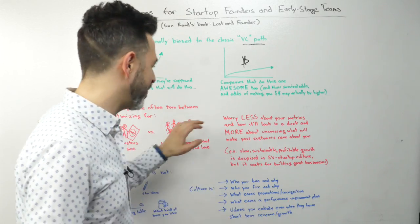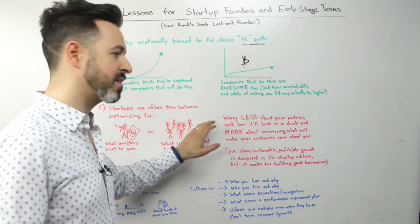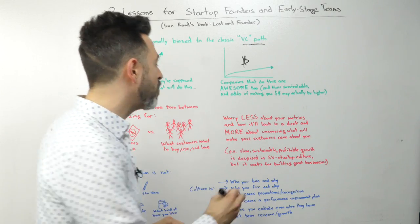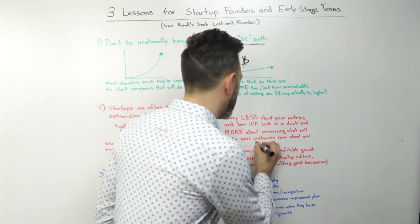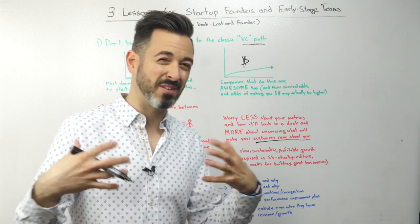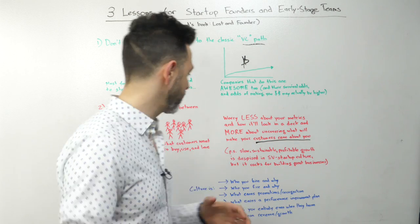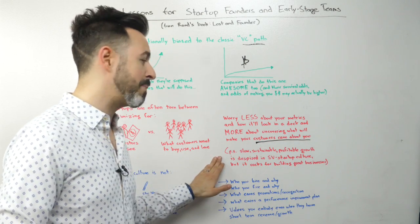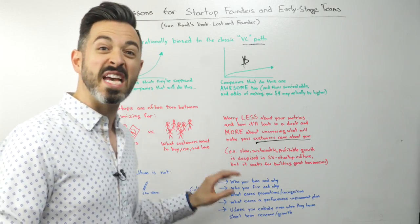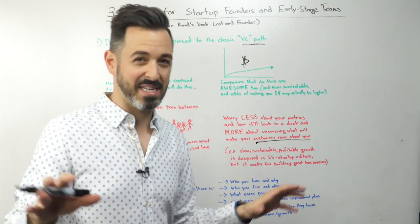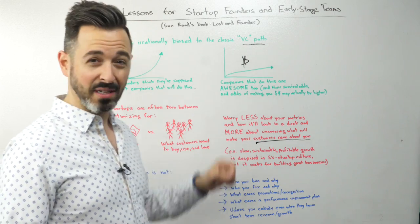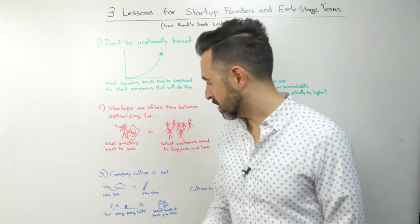I don't love that. I'd worry less about your metrics and how those will look, and more about uncovering what will make your customers rave about you. I've been guilty of this many times myself. That slow, sustainable, profitable growth is despised in Silicon Valley startup culture, but it's awesome for building great businesses.